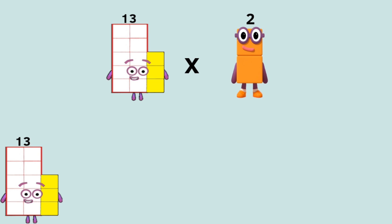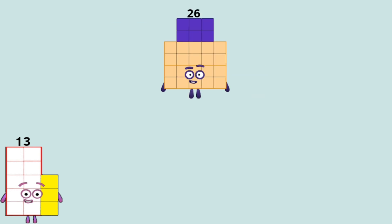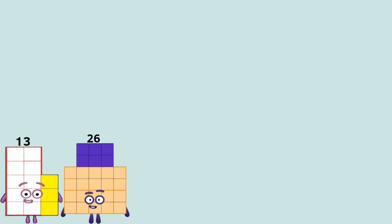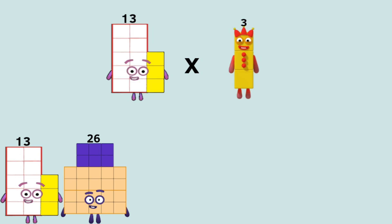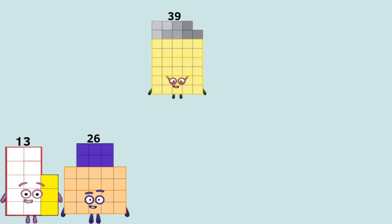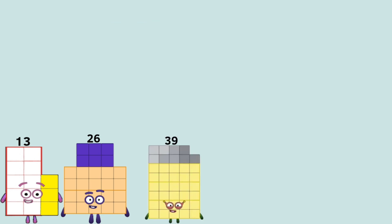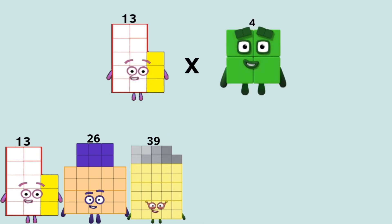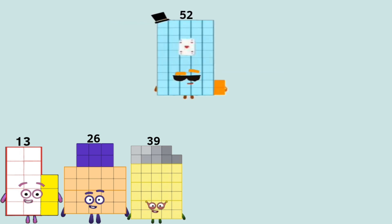Thirteen times two equals twenty-six. Thirteen times three equals thirty-nine. Thirteen times four equals fifty-two.